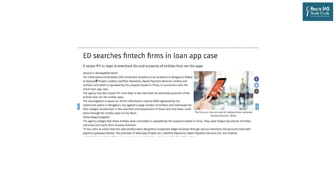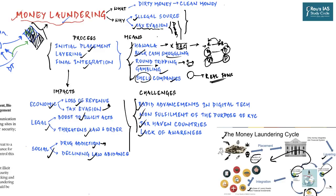The next article — 'ED searches fintech firms in loan app case' — reports that the Enforcement Directorate conducted searches at six locations in Bengaluru linked to Razorpay Private Limited, Cashfree Payments, Premium Payment Services Limited, and entities controlled by suspects based in China. The Enforcement Directorate is the implementing agency of the Prevention of Money Laundering Act. Under GS Paper 3, money laundering and its prevention is part of the syllabus under internal security, as it is more often than not generated from illicit acts like drug trafficking and arms smuggling.